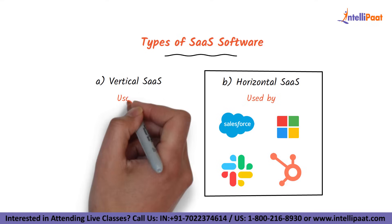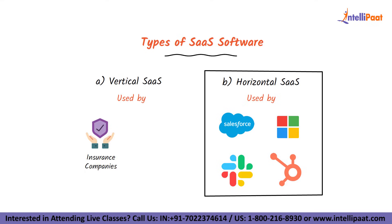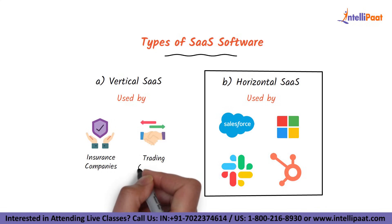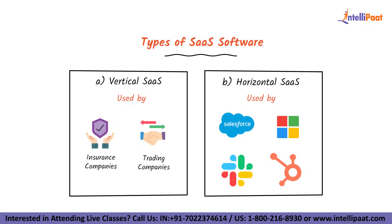On the other hand, vertical SaaS solutions are created to target a specific or niche industry — examples include insurance, trade, or an underserved industry. The model focuses on the industry's verticals and creates solutions for the niche industry's pain points and needs. That's all for today's session on what is SaaS. Make sure to subscribe to our channel and hit the bell icon to get regular updates from us.